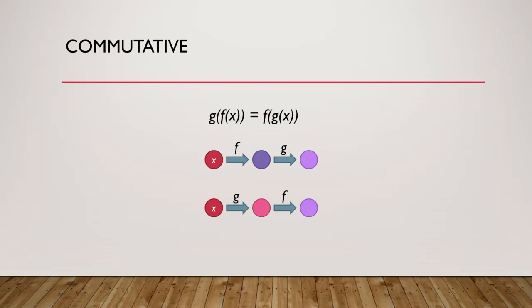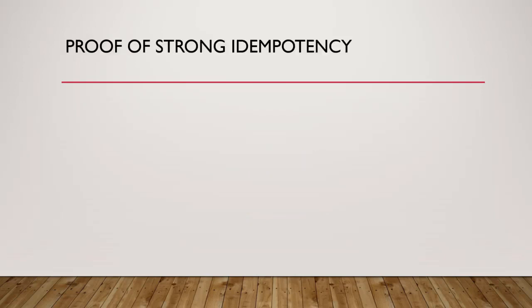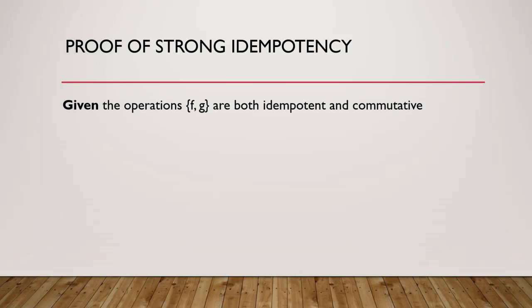It seems obvious that commutativity is a desirable goal in distributed systems, though there are some cases — like active-passive systems where output of one affects the input of the next — where it's really hard to achieve. If we have the commutative property and we have idempotency, then I can prove that you have strong idempotency. Given that operations f and g are both idempotent and commutative, I want to show that f and g are also strongly idempotent. Anyone want to grab a whiteboard marker and show me the proof?